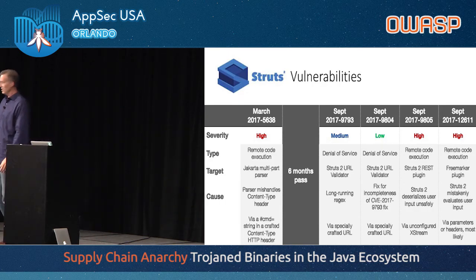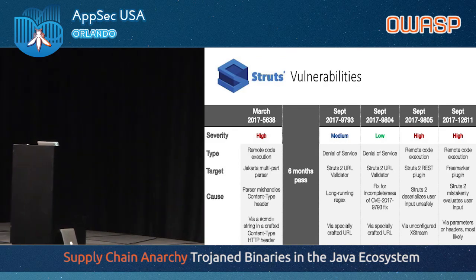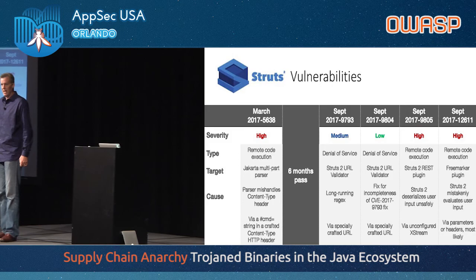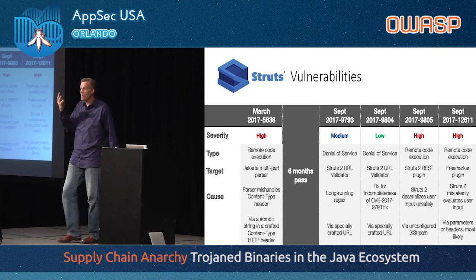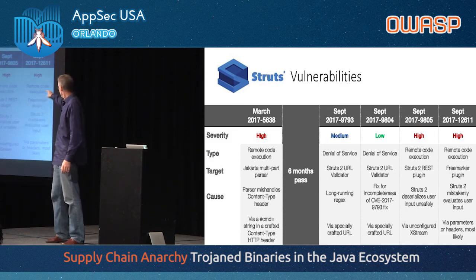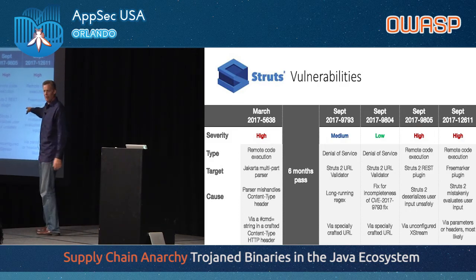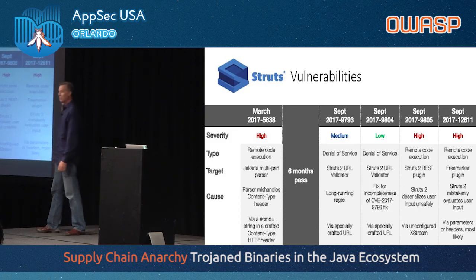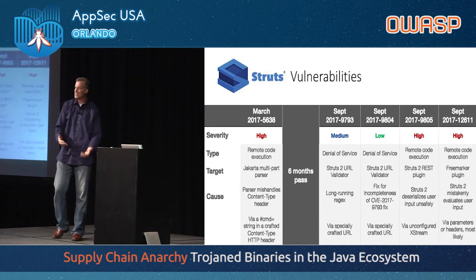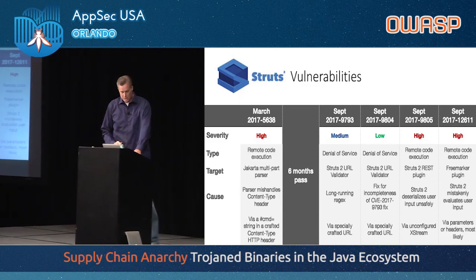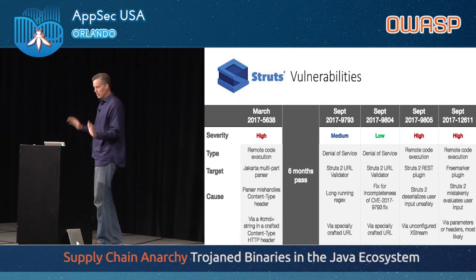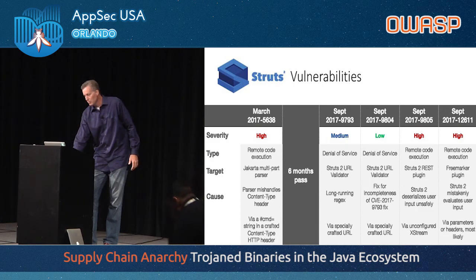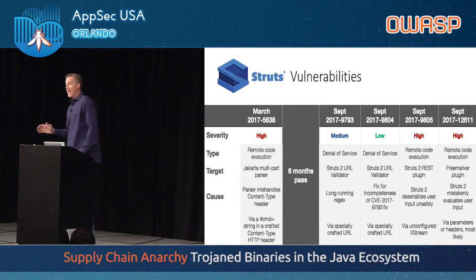Back in March there was a serious vulnerability called CVE-2017-5638. In the last week since the Equifax incident came into the news, four more Struts 2 vulnerabilities were released, two of which were highs. It's pretty difficult to get a CVSS score of high — these are all remote code execution vulnerabilities in a single library. I want to caution you: just because a library has known vulnerabilities isn't necessarily a bad sign. A healthy software project will be discovering vulnerabilities.